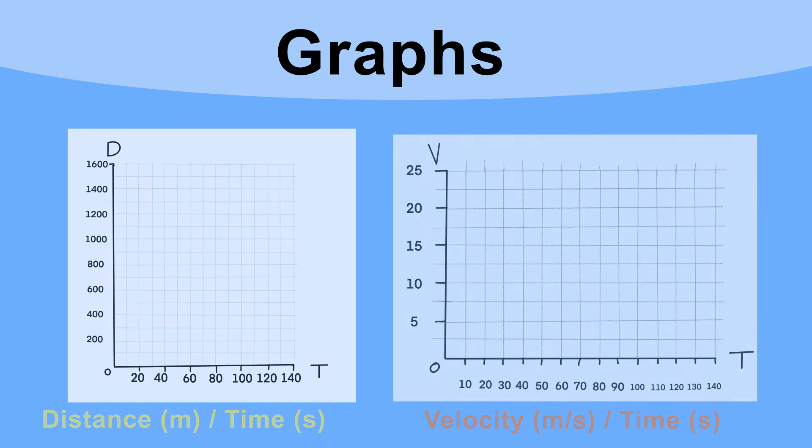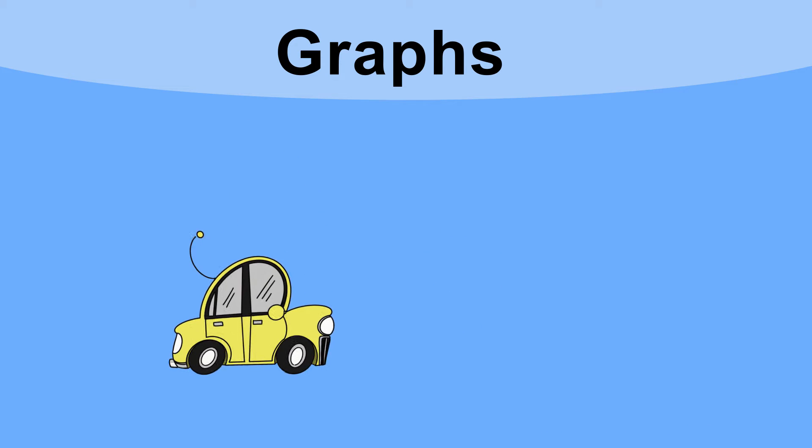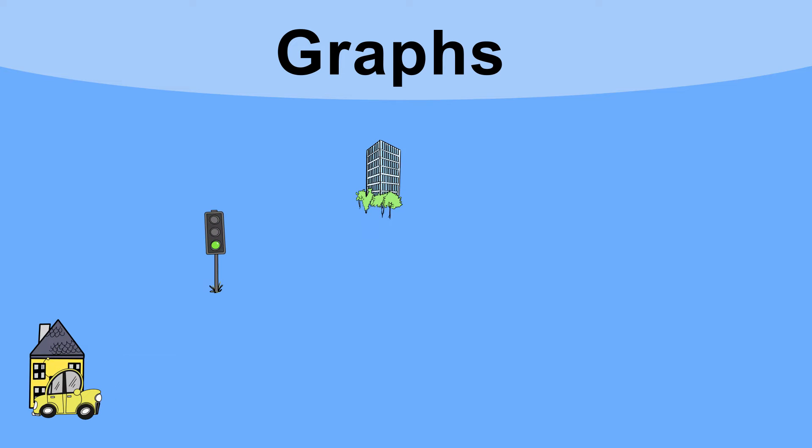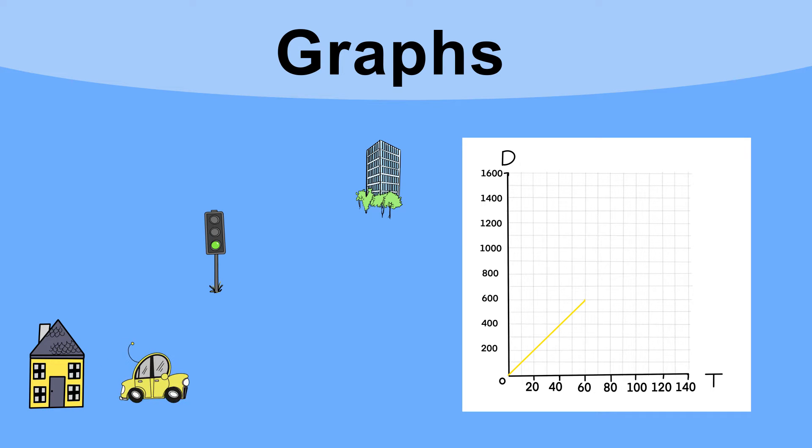So let's look at a journey to work by car. The actual journey is on the left of the screen and the distance-time graph is on the right. The car sets off and the distance traveled increases steadily with time. This shows us that the car is moving a constant number of meters per second, or at a constant velocity.